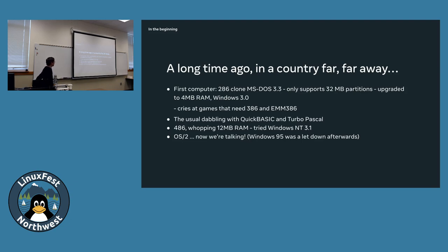My father told me not to go into computer science because obviously I don't really like programming. Our second computer was a 486 with 12 megabytes of RAM, and I tried Windows NT — which came on floppies — and OS/2, which I really liked. Then Windows 95 came along, and it was a letdown, but it took over the world. Pretty sad.